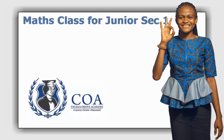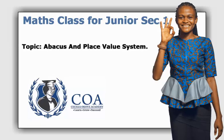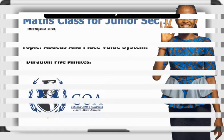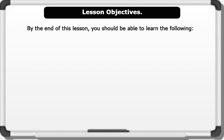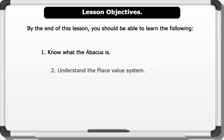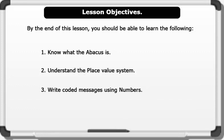Hello. Our topic for today's lesson is Abacus and Place Value System. Lesson duration is 5 minutes. Let's check out the lesson objectives. By the end of this lesson, you should be able to: 1. Know what the abacus is. 2. Understand the Place Value System. 3. Write coded messages using numbers. Please pay attention as we go through the lesson together.